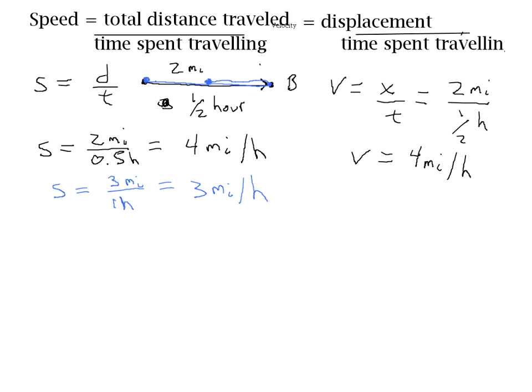For the second trip, when we went from A to B and then back to C, the distance between our starting point and our ending point is just one mile. So for the second trip, our displacement is one mile. It still took us one hour to do it, so our average velocity was only one mile per hour.